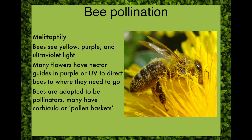As you can see on this bee visiting a composite flower, it's totally dusted with pollen. Many bees have hairs on their hindmost legs — their third pair of legs — that are folded over to form structures called corbicula, which they can stuff full of pollen to take back to the hive.